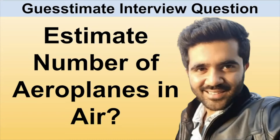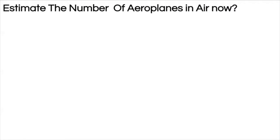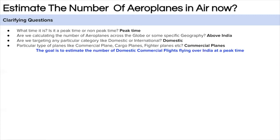Welcome back. In this video we will be solving a guesstimate question: estimate the number of airplanes in the air right now. The first clarifying question is about time — since peak vs. non-peak matters greatly, let's assume we are calculating during peak hours. The second question is about geography — let's assume airplanes flying over India. The third question is about categories — let's assume domestic passenger flights only.